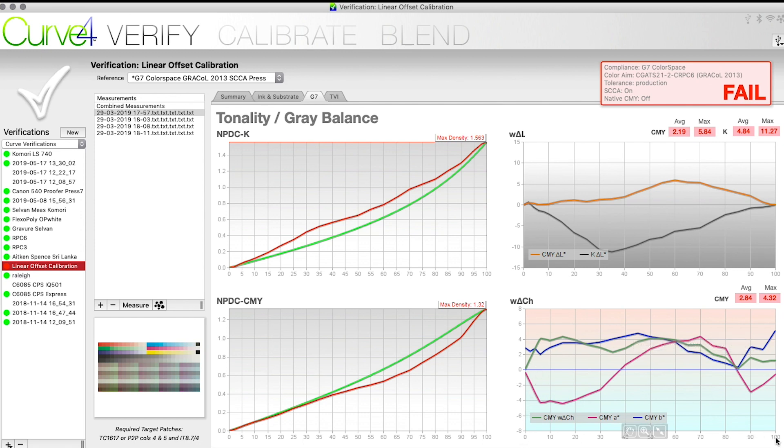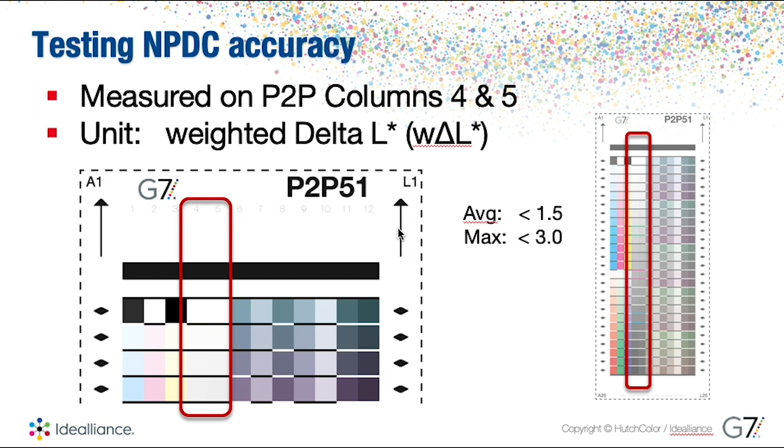Now that you've taken a look at Curve4 and you've been able to see a pass and fail and you're able to look at the delta CH and the delta L—or the weighted delta L star and the weighted delta CH—remember that the weighted delta L star is defining the tonality accuracy, whether it's too dark or it's too light. Again, we're measuring those two ramps for the black from zero to 100 percent and the CMY triplets from zero to 100 percent.